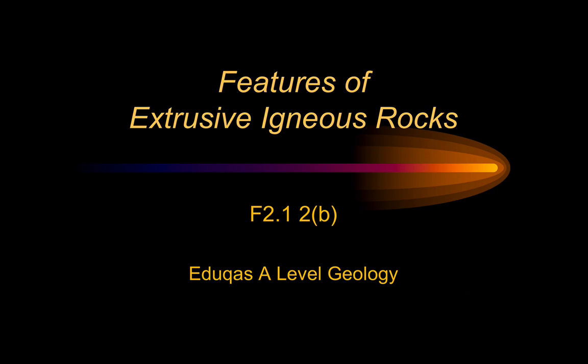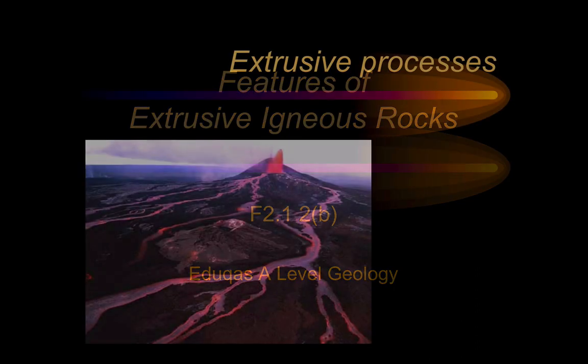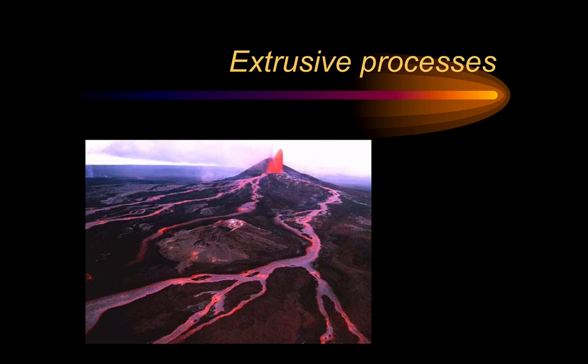This video is going to focus on some of the features that we can see in extrusive igneous rocks. Most of these are characteristic of lava flows, but they're all features that we can commonly find within igneous rocks that can tell us something about how they form. Extrusive igneous rocks are rocks that are erupted from volcanoes, and clearly the type of volcano and the magma that creates it will have a big effect on the type of extrusive igneous rocks that we see.